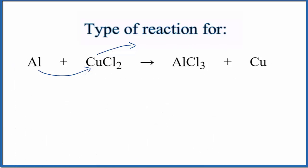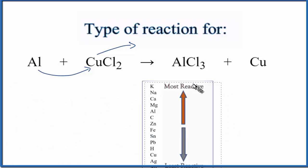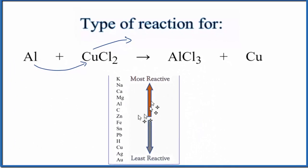To tell if this reaction is actually going to happen, we can look at the activity series of the metals. So if we look at our activity series, the most reactive metals, those are at the top. These are the most reactive.